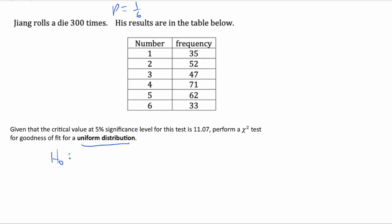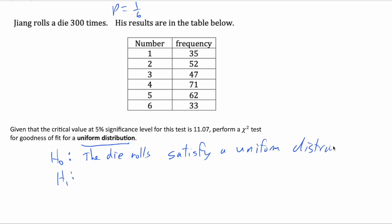Let's start with the null hypothesis and alternative hypothesis, as you should always do. The null hypothesis is that the die rolls satisfy a uniform distribution. And the alternative hypothesis is that the die rolls do not satisfy a uniform distribution.